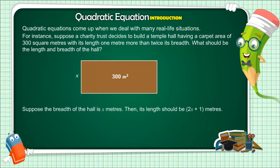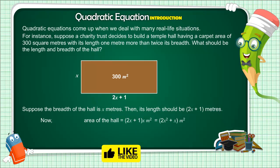Suppose the breadth of the hall is x meters. Then, its length should be 2x plus 1 meters. Now, area of the hall equals 2x plus 1 into x m², which is equal to 2x² plus x m².